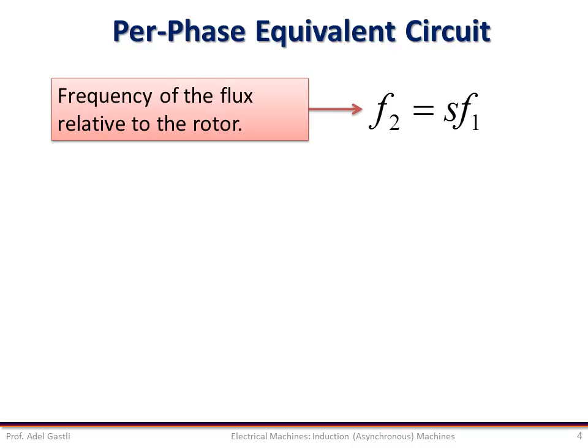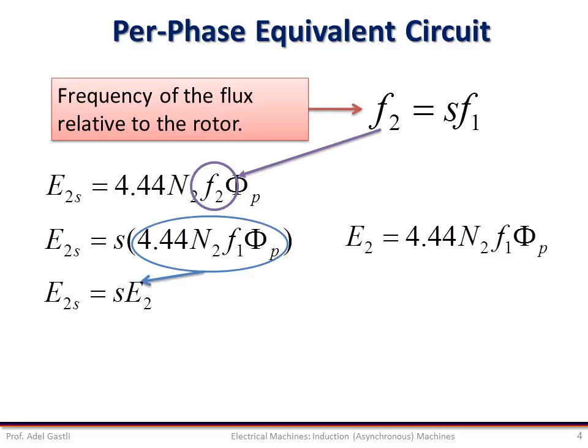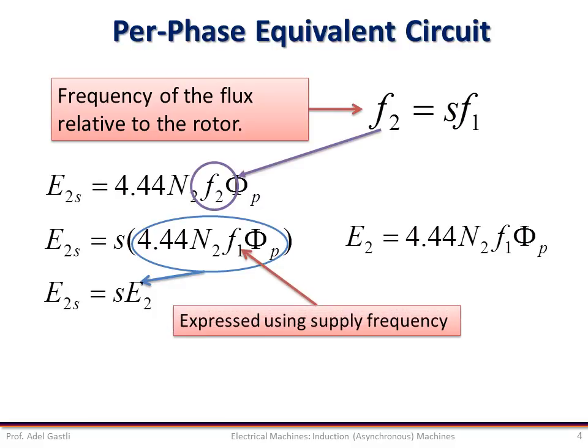As we have seen previously for sinusoidal excitation of magnetic circuits, the induced back EMF in the rotor can be expressed as a function of the rotor circuit frequency F2. Replacing F2 by S·F1, we can obtain the expression of the rotor back EMF E2S, or express it as a function of the slip and the back EMF E2 as a function of the stator supply frequency F1. So E2S is a function of the rotor frequency F2, while E2 is a function of the stator frequency F1.